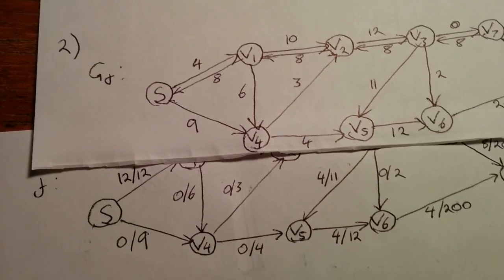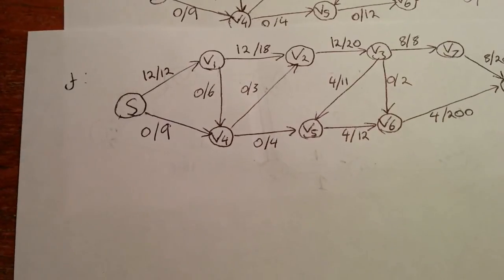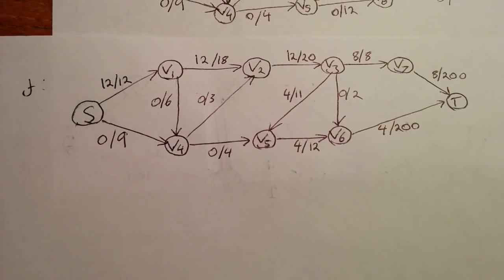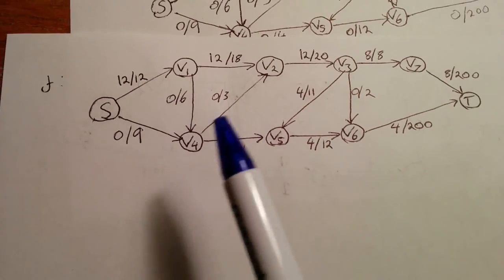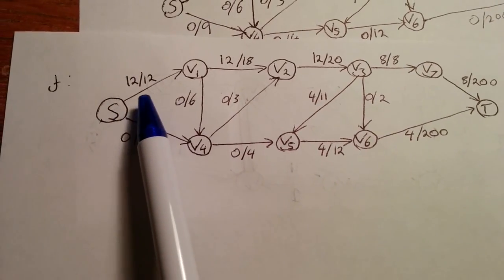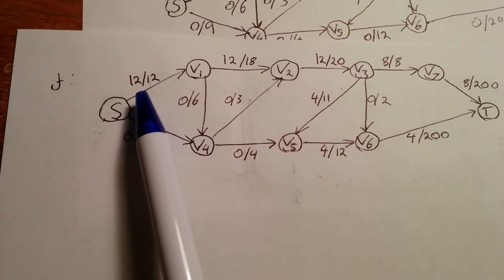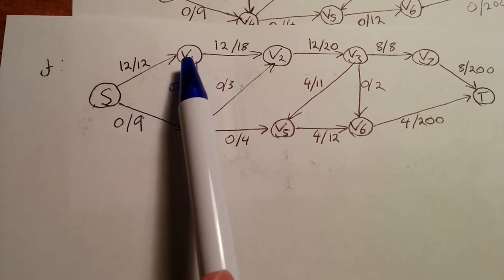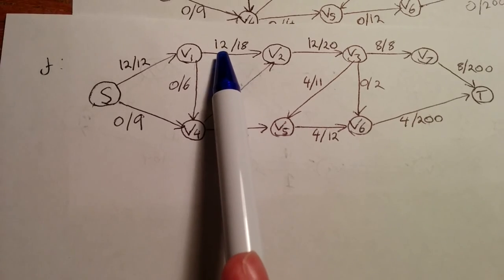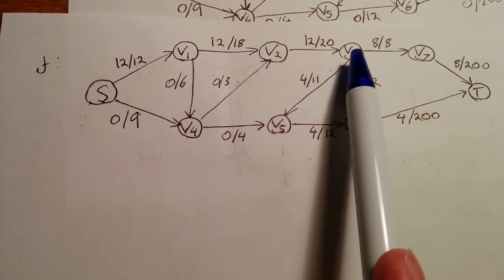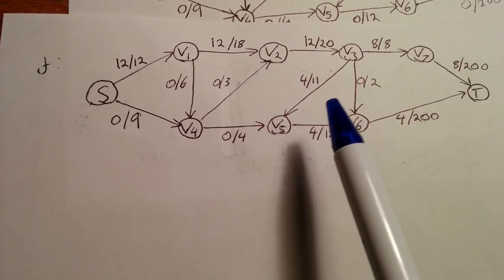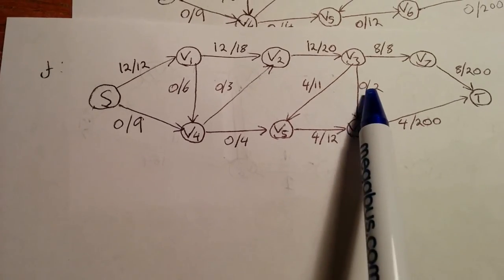So here, we have the updated F graph with that new information. As you can see, I've pushed an extra 4 across. So now the total capacity from S to V1 is 12, because it is 8 plus 4. And then previously, we had 8 on these, so we've added 4, and it's just the same as before. And the ones that we haven't touched remain at 0.